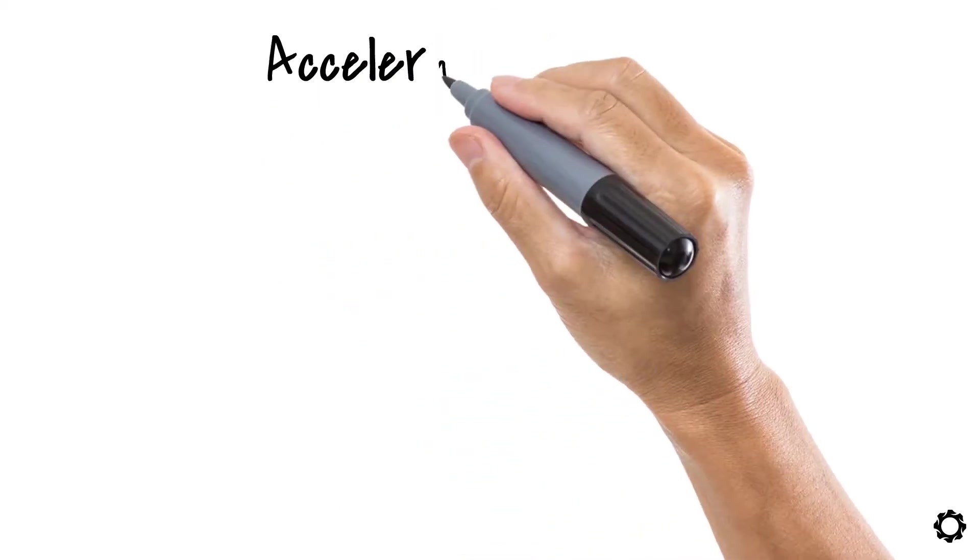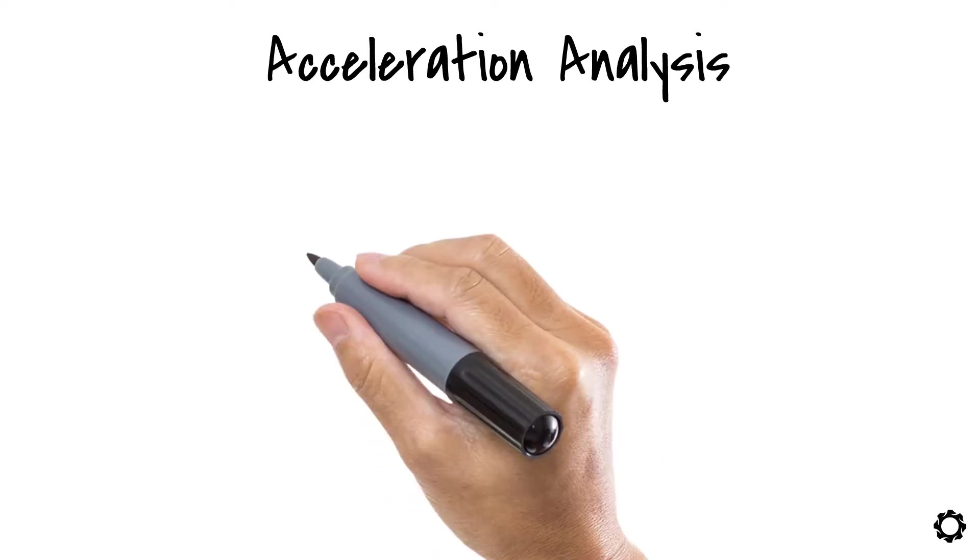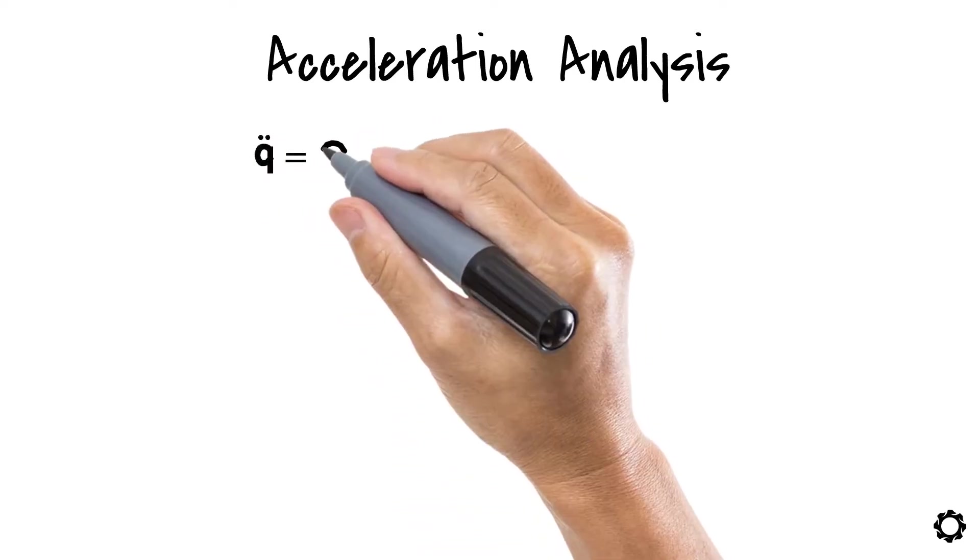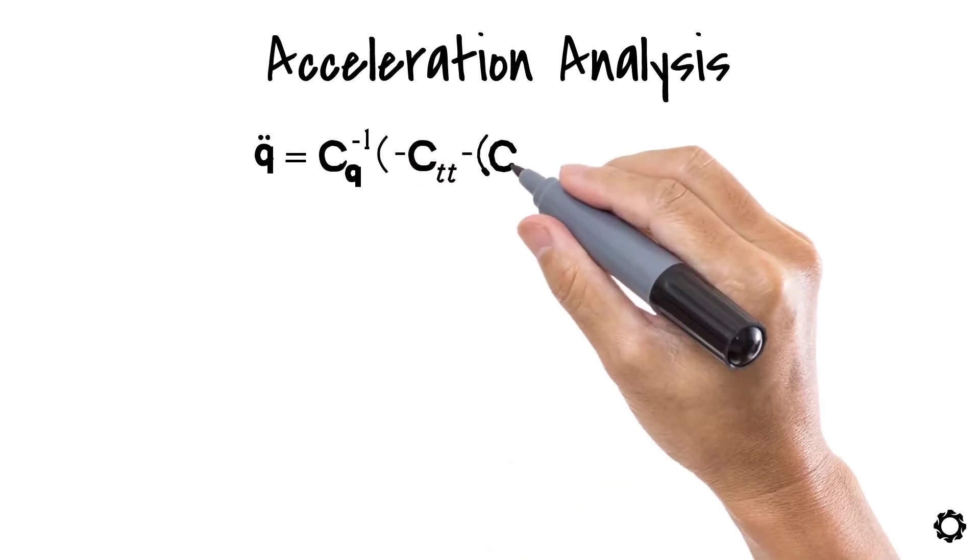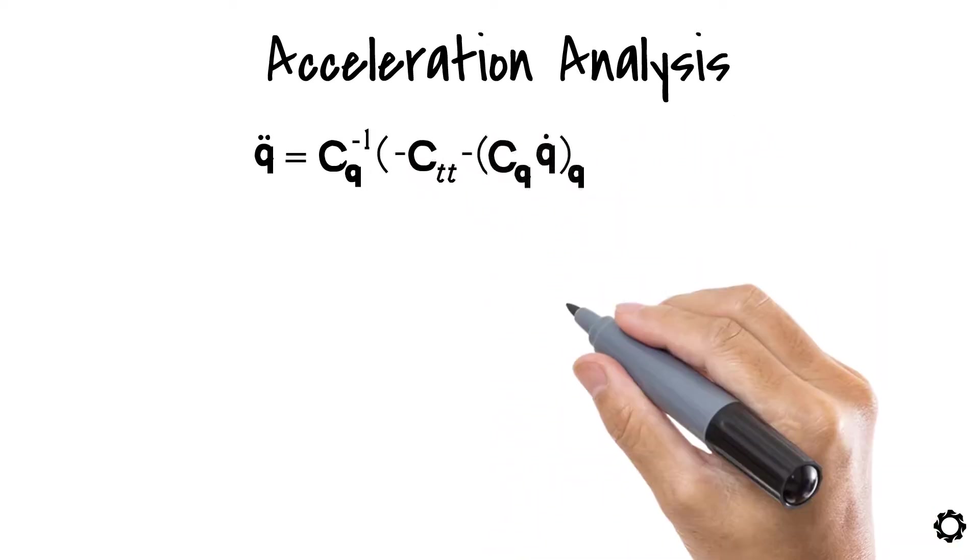Now for the case of the acceleration analysis, we have q double dot equals cq inverse times minus ctt minus cq times q dot q times q dot minus 2 times cqt times q dot.